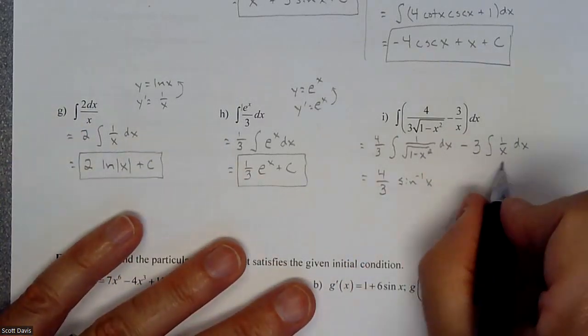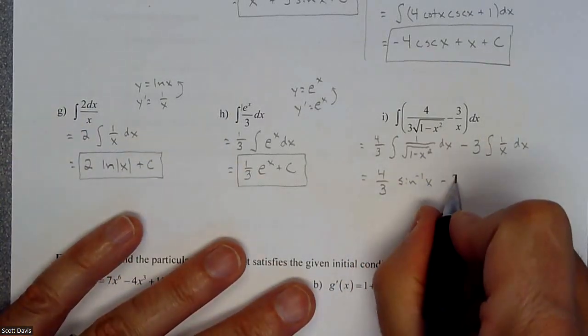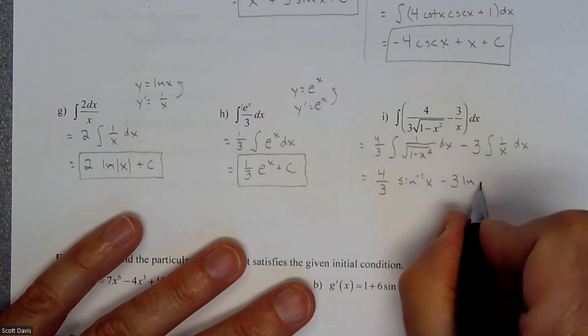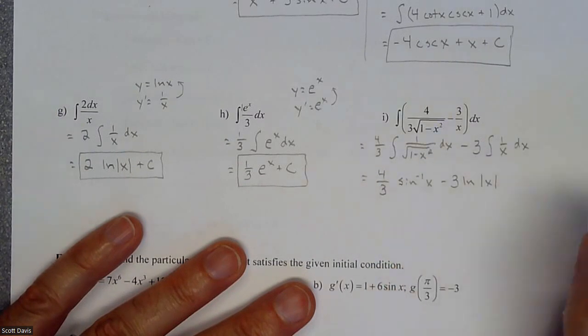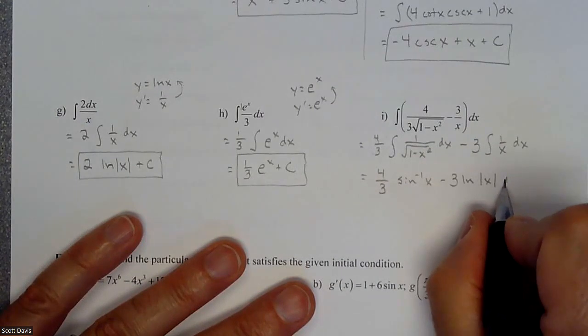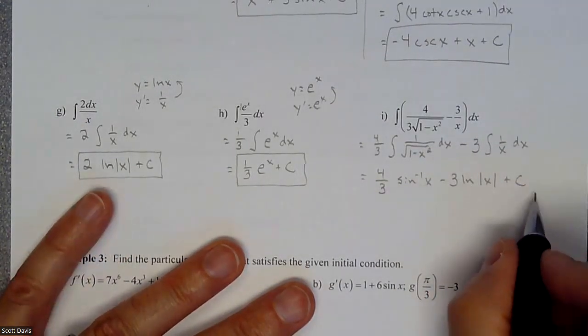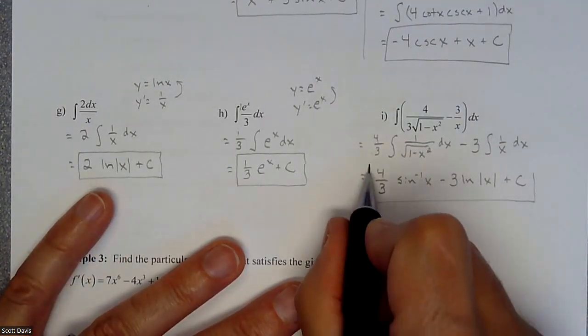And then our natural log here. So minus three natural log absolute value again, then plus some potential constant.